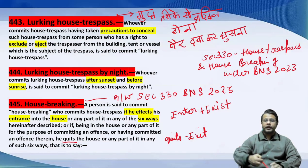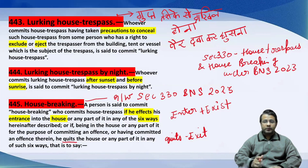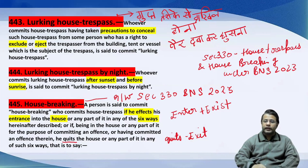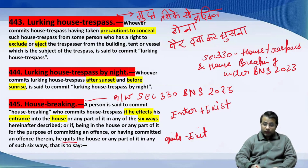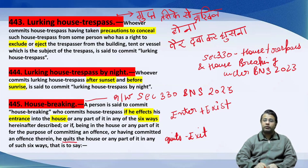अब देखें lurking house trespass क्या होता है। Lurking का मतलब पहले समझते हैं — 442 की definition लेंगे फिर lurking को समझेंगे। Lurking का मतलब है — गुप्त तरीके से। देखा होगा आप लोगों ने कि बहुत इशारती तरीके से लोग ऐसे आते हैं, पैदल चल के — दबे पाँव — गुप्त तरीके से, कि पैर तक की आवाज़ नहीं होती।